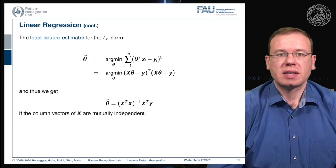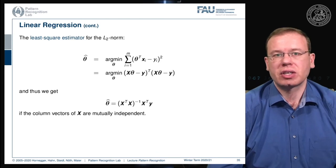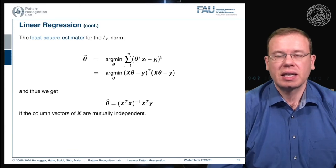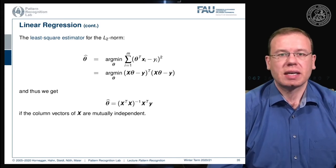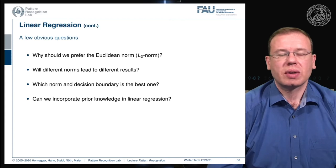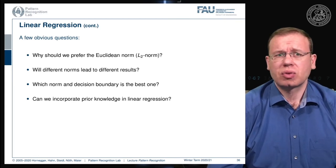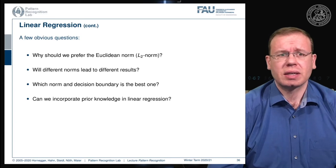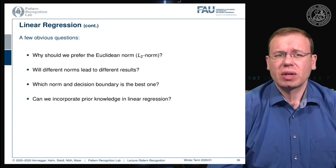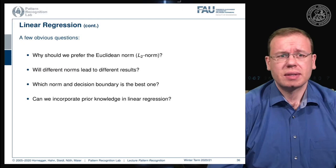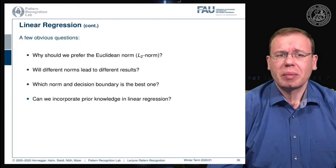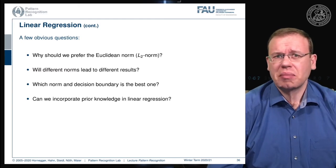One way to solve this is to take the singular value decomposition. Another way is to apply regularization. The questions we want to ask are: why should we prefer the Euclidean norm, the L2 norm? Will different norms lead to different results? Which norm and decision boundary is actually the best one? Can we incorporate prior knowledge in this linear regression?